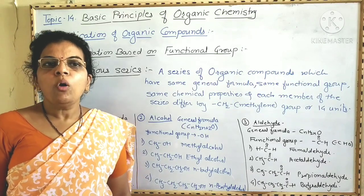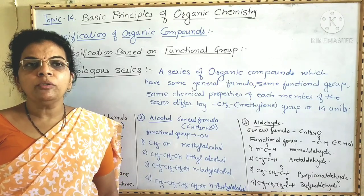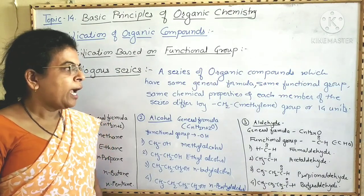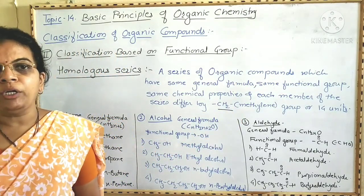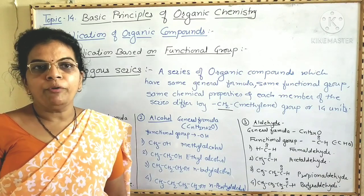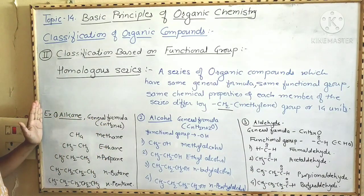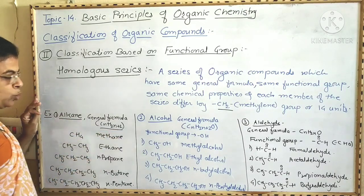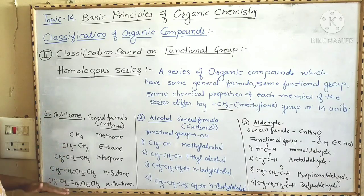Now we are going to see the homologous series. It is a series of organic compounds which have the same general formula, the same functional group, and the same chemical properties. Each member of the series differs from the next by a methylene group, that is a CH2 group, or by 14 mass units. As an example, let us look at alkane. The general formula of alkane is CnH2n+2. Alkane is a hydrocarbon and therefore does not possess a functional group.